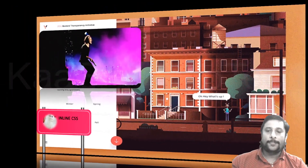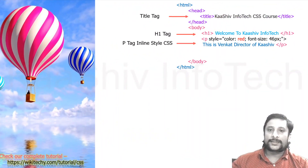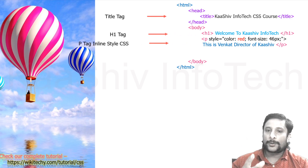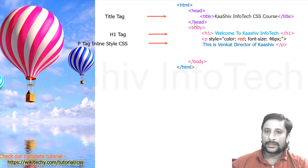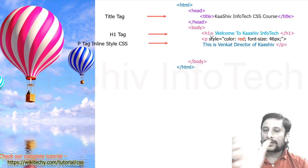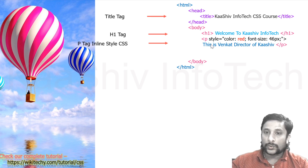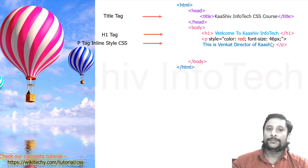So, what is the inline CSS? Inline CSS is defined in the HTML tag. The head tag is the body tag. The body tag has the H1 and paragraph tag. HTML, head tag is the body tag. This is the title and CSS course. Welcome to Carshave Info. You can see the H1 heading. Paragraph color is red - this is the red color. It is font size 46 pixels. So, this is the inline CSS.